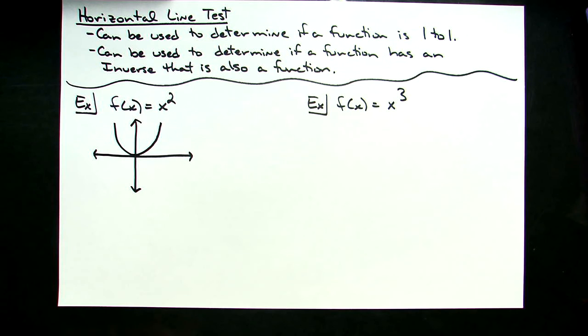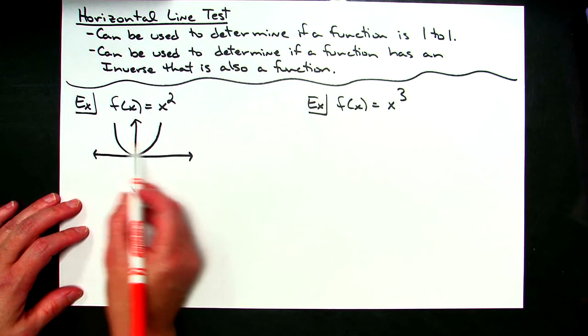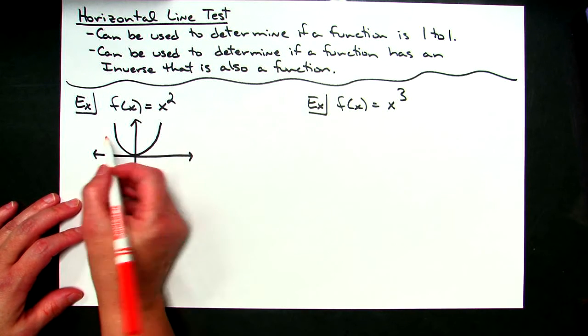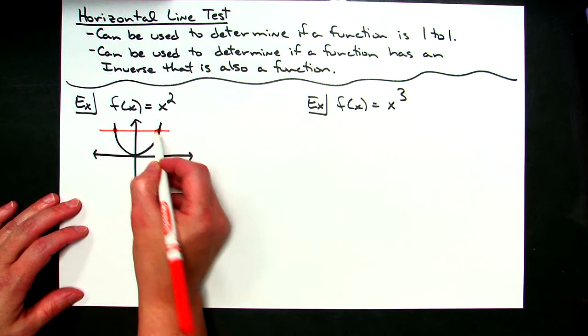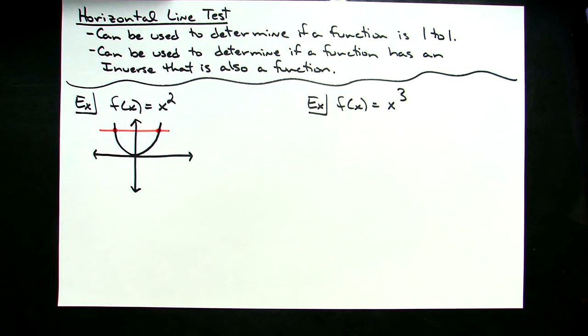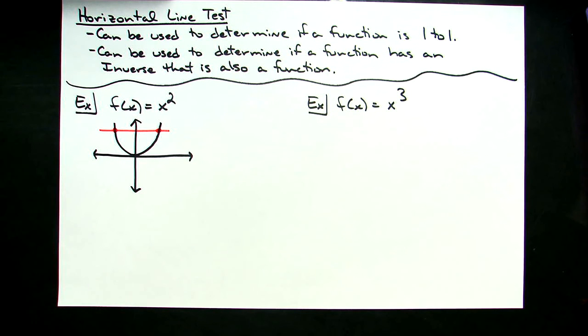Now I'm going to apply the horizontal line test. Horizontal line test says that I'm going to draw a horizontal line anywhere crossing this function. If it crosses in more than one spot, it has failed the horizontal line test, and we can easily see no matter where I draw that horizontal line, it's going to fail because it's going to cross the function in more than one spot.